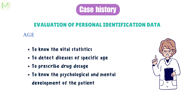Next, age is asked to the patient. Age is a very good indicator of vital statistics such as height, weight, and build. It aids in detecting any age-specific diseases and is needed to prescribe the correct dosage of drugs. It is also helpful to know the psychological and mental development of the patient. Certain treatment modalities are carried out at certain ages only.